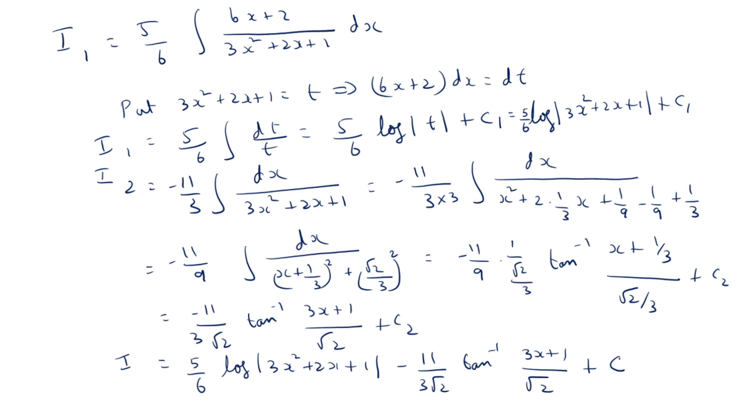Therefore, I equals I1 plus I2, which is (5/6) log|3x² plus 2x plus 1| minus (11/(3√2)) tan⁻¹((3x plus 1)/√2) plus C. So we have got the integral of the given function. I hope this video was useful for you. Thank you for watching.